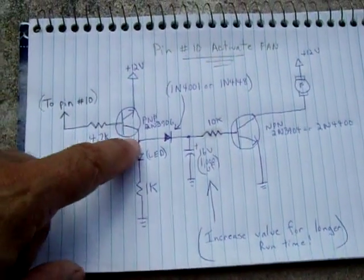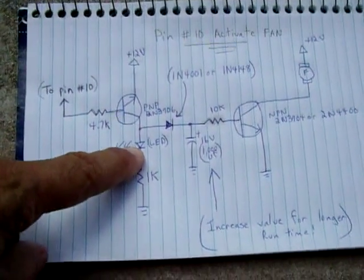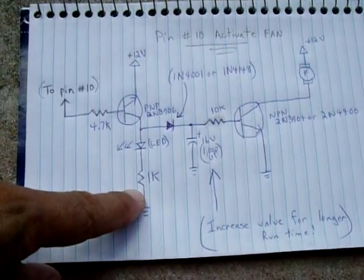But on the way to ground, the power is going to light up this LED. You need the resistor to limit the current.